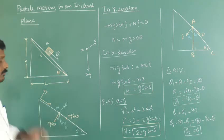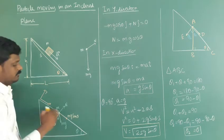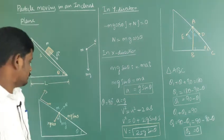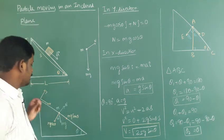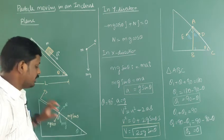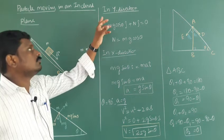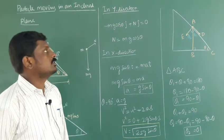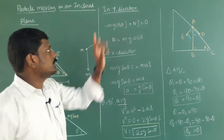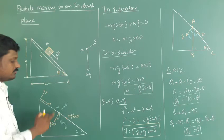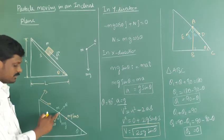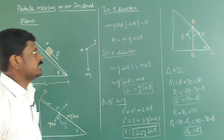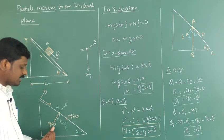The forces acting are the normal force and the gravitational force. For motion along the x direction, the mass moves only in x. There is no motion along the y direction, so the acceleration in y is zero. Applying Newton's second law along the y direction, the forces are the normal force and the perpendicular component mg cos theta.